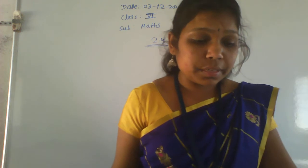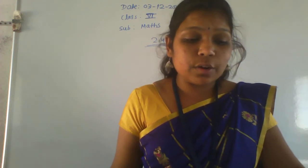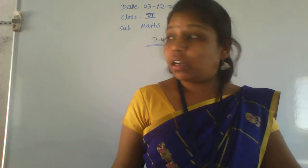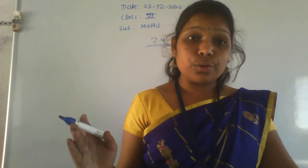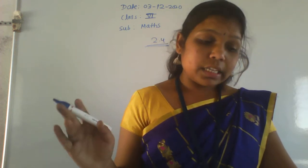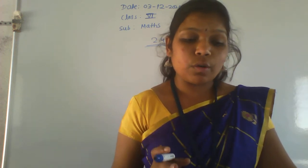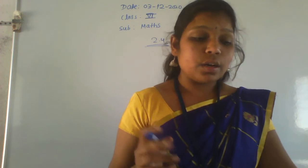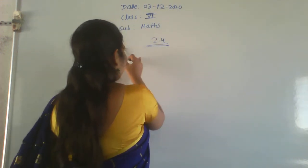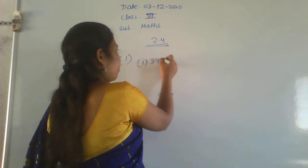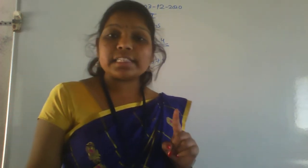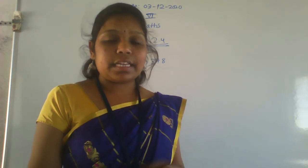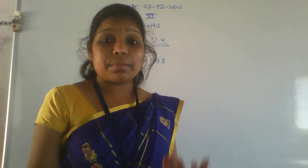So we will start with Exercise number 2.4. The first question: check the divisibility of the following numbers by 2. You have to check whether the given number is divisible by 2 or not. What is the divisibility criteria for 2? The last unit place digit should always be an even number. Then we can say that number is divisible by 2.